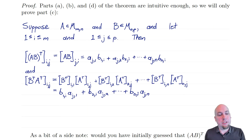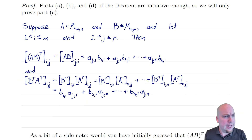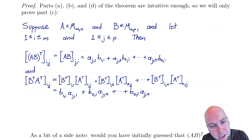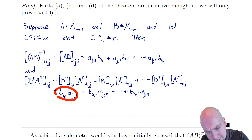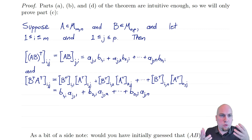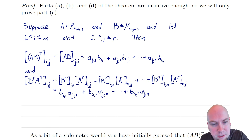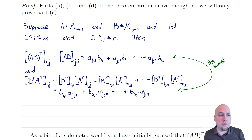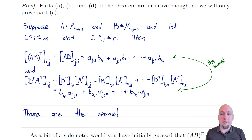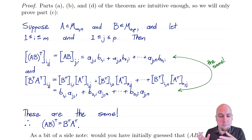Now I've expressed the ij entry of B^T A^T in terms of entries of A and B themselves. Staring at both quantities: I've got a_j1 times b_1i — and that's exactly what the corresponding term on the other side is: a_j1 times b_1i. The fact that they're in the opposite order doesn't matter because these are real numbers and real number multiplication is commutative. So every term matches up, and we conclude that all entries are equal. Therefore (AB)^T = B^T A^T — the transpose swaps the order of multiplication.